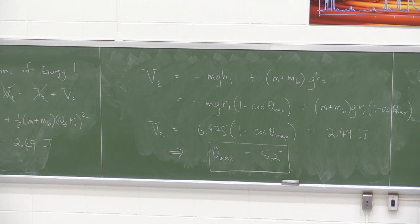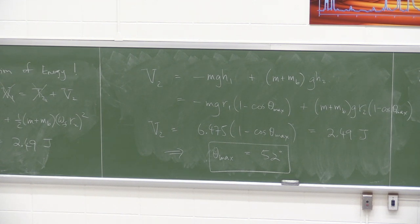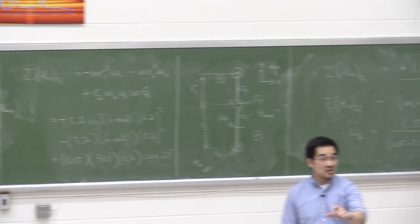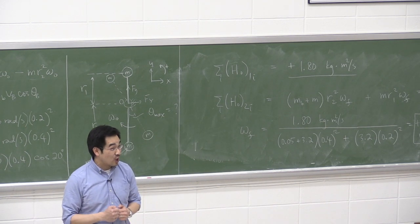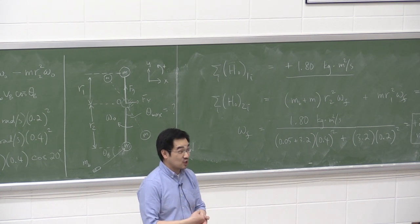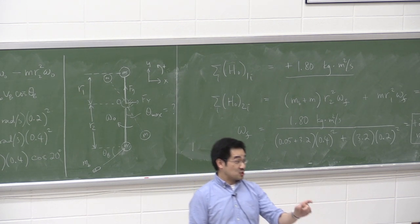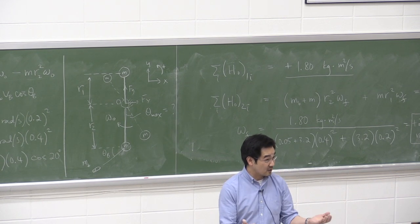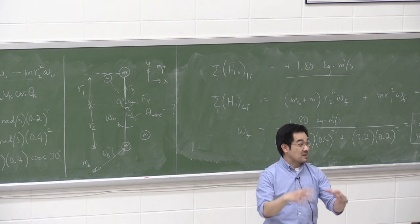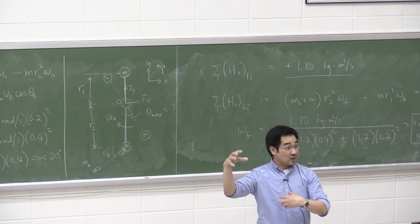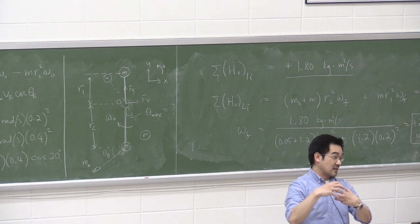Question: can angular momentum be thought of as how fast an object rotates? Angular velocity is how fast it rotates (theta dot). Angular momentum takes that into account along with mass. Analogy: a truck at 90 km/h has enormous momentum due to its mass; a peanut at the same speed has the same speed but much less momentum. Similarly, angular momentum equals mass times linear velocity times moment arm.